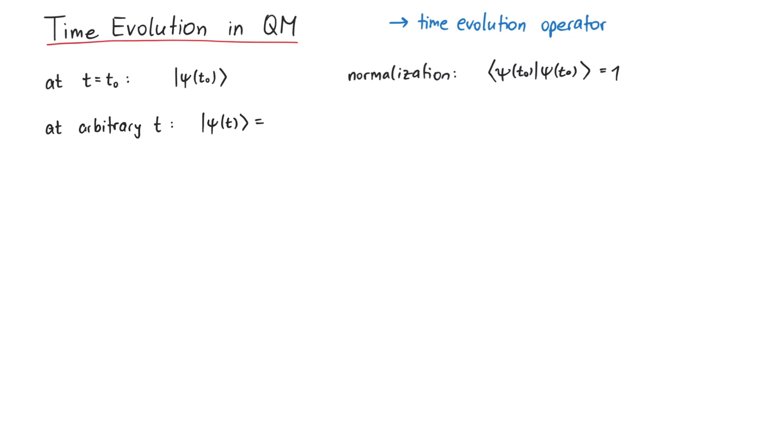Therefore, the two states at different times must be connected by some operator, which we usually call u. The arguments in brackets tell us that this time-evolution operator u transforms a state at time t0 to another time t.